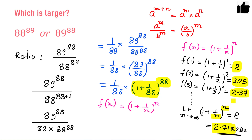So what is the value of our ratio? The ratio is 1 over 88 times the quantity 1 plus 1 over 88 raised to the power 88, and the maximum value of that quantity is 2.71. This means the whole expression will in fact be less than 1 over 88 times 2.71, and of course this total value is less than 1.